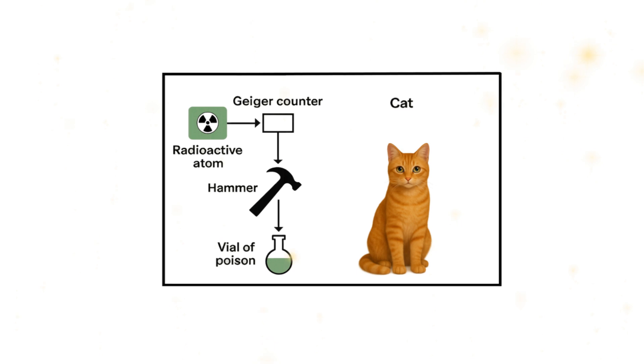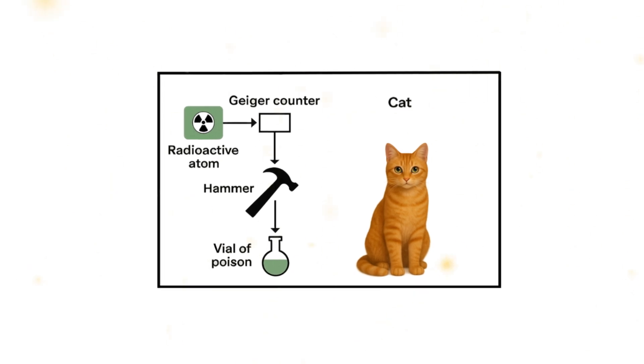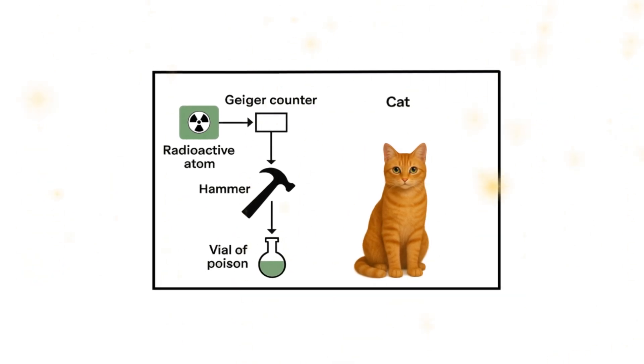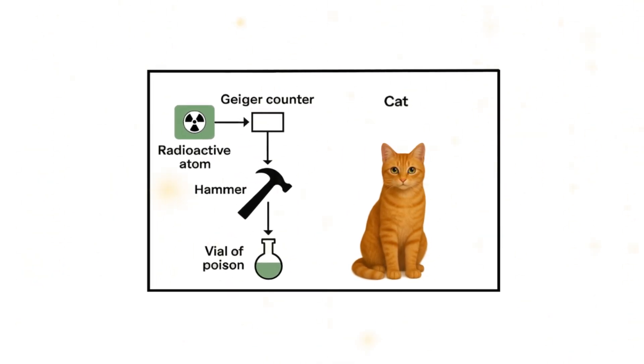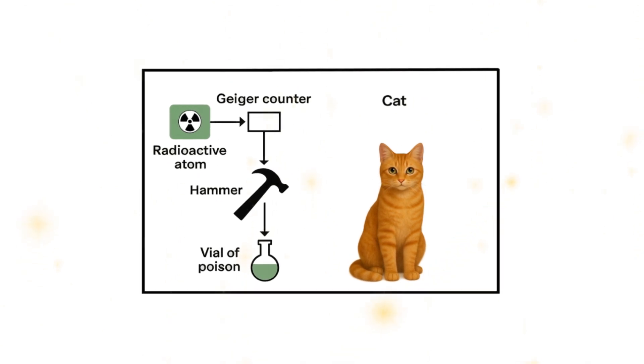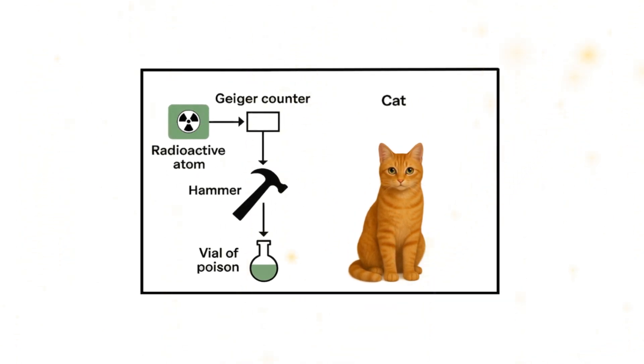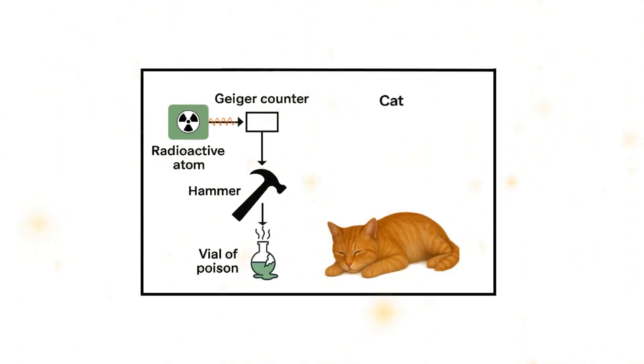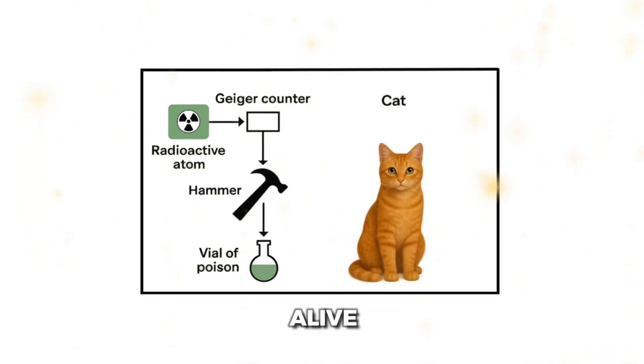The thought experiment goes something like this. A cat is placed in a closed chamber with a radioactive atom that has a 50% probability of decaying in the next one hour. This radioactive material is connected to a GM counter, which when activated, through the process of a hammer, breaks a vial of cyanide which releases poison inside the chamber, thus killing the cat. So if the radioactive atom decays, the cat dies. And if the radioactive atom does not decay, the cat remains alive.